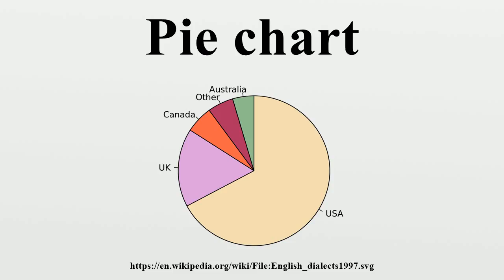The earliest known pie chart is generally credited to William Playfair's statistical breviary of 1801. Pie charts are very widely used in the business world and the mass media. However, they have been criticized, and many experts recommend avoiding them, pointing out that research has shown it is difficult to compare different sections of a given pie chart, or to compare data across different pie charts. Pie charts can be replaced in most cases by other plots such as the bar chart, box plot, or dot plots.